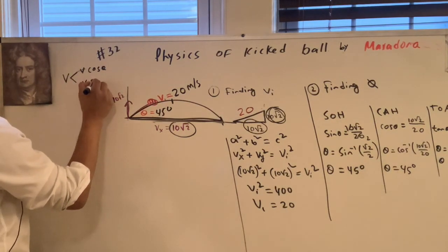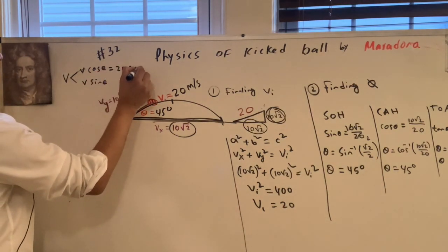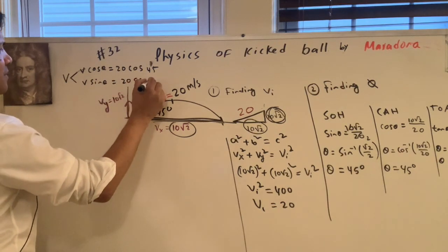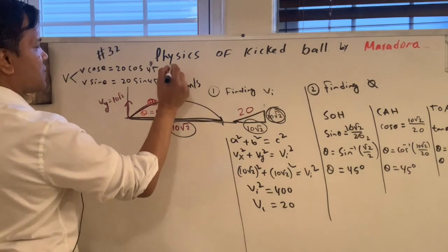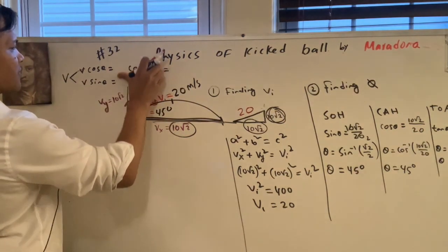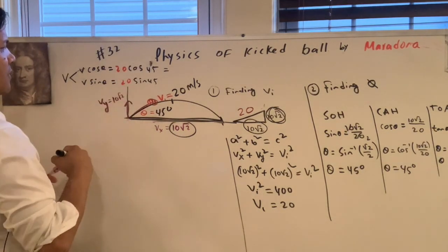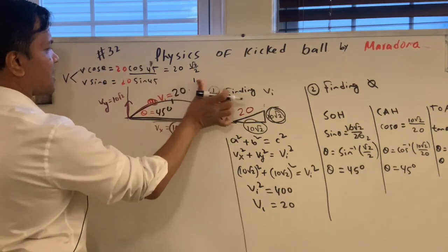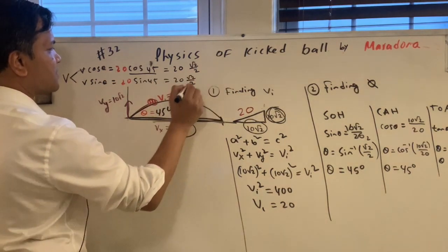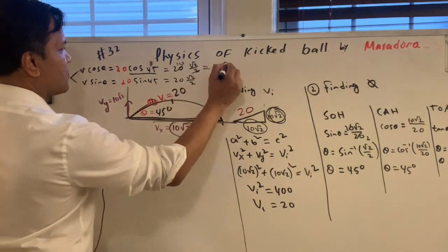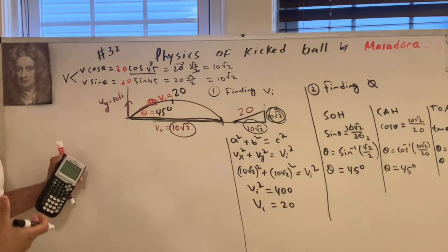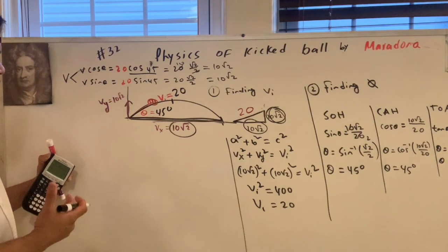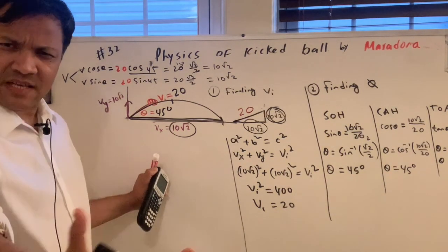The velocity has two components: V·cos(θ) and V·sin(θ). With V = 20 and θ = 45°: the X component is 20·cos(45°) = 20·(√2/2) = 10√2, and the Y component is 20·sin(45°) = 10√2. Both components are equal because the ball was kicked at 45 degrees. That's why 45 degrees gives the maximum range — and Maradona knew that.